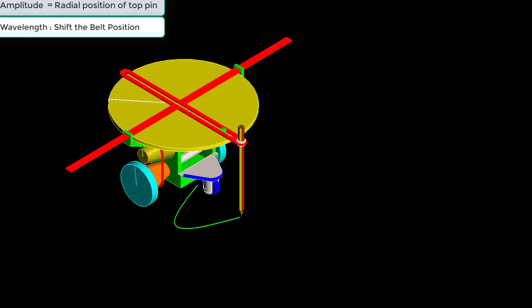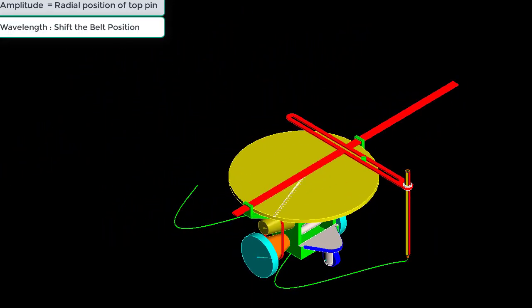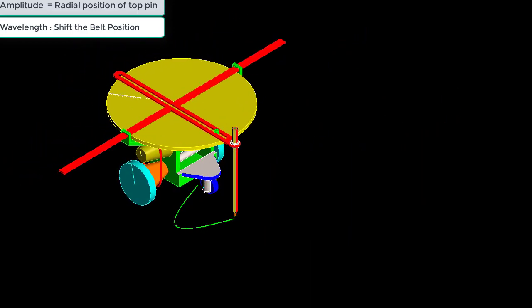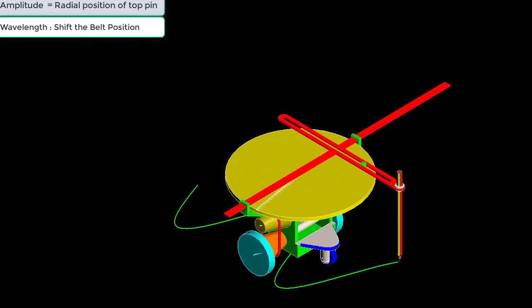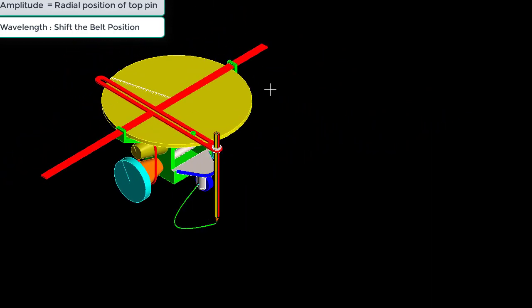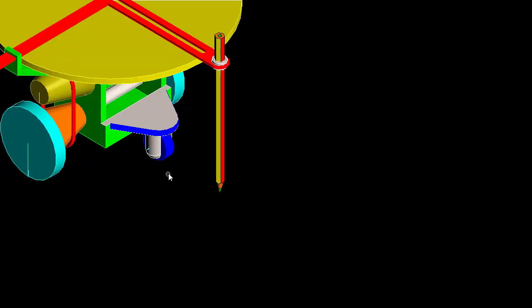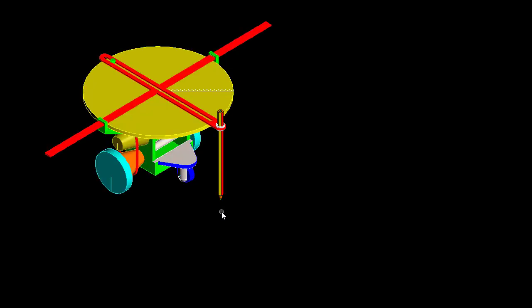How about wavelength? The wavelength is how much the mechanism moves forward in one complete rotation of the top disc — in one oscillation. So it is just a matter of changing the velocity ratio, and we can do that by changing the belt position on the cone pulleys. If we move the belt to a different step, the velocity ratio between the lower wheels — which drive the mechanism forward — and the top disc — which makes the pencil oscillate — will change, and so the wavelength can be changed.